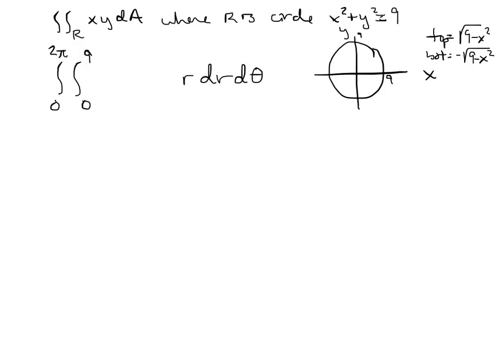Alright, so now we need to convert over this x times y in there. So I think of this as two pieces, the bounds we're done with those. And now I need to convert over x and y. Now x in polar coordinates is r cosine theta, and y in polar coordinates is r sine of theta. So I've got x, r cosine of theta, times y, r sine of theta, times r from the bound, or from the switch over to polar coordinates.